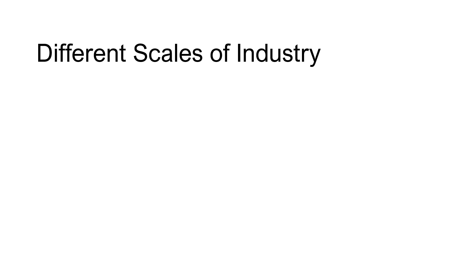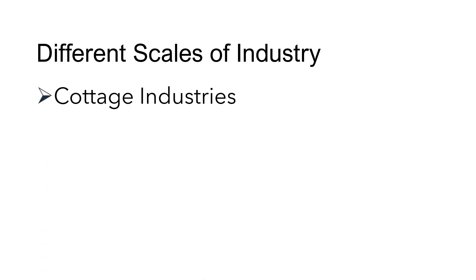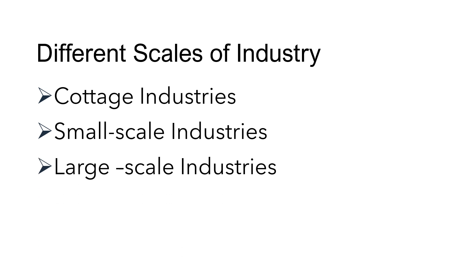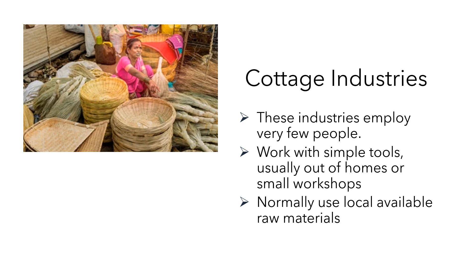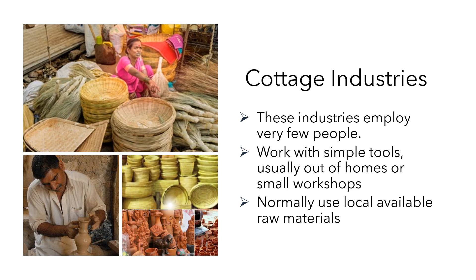There are different scales of industries: cottage industries, small scale industries and large scale industries. Cottage industries employ very few people. They work with simple tools, usually out of homes or small workshops, and normally use locally available raw materials. Handicrafts, pottery, hand-woven and embroidered cloth, and baskets are made in cottage industries. Some cottage industries also make footwear, woolen clothing and toys.